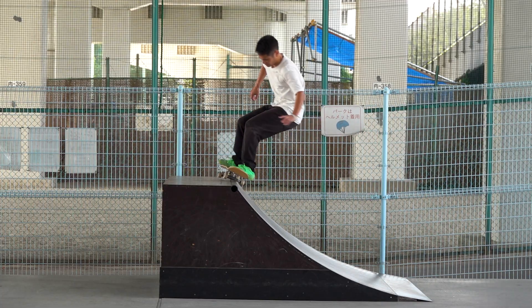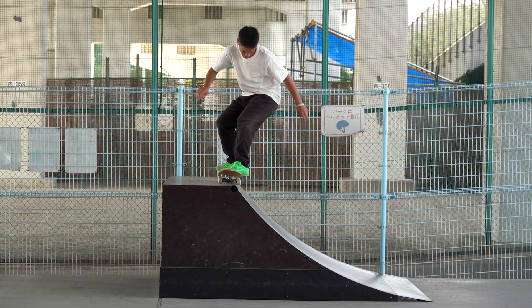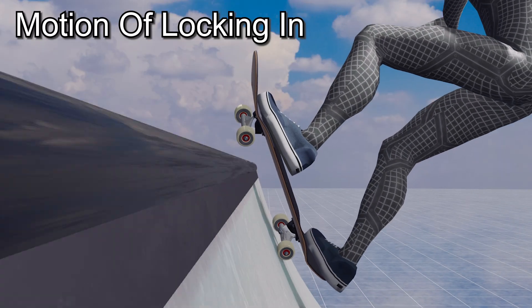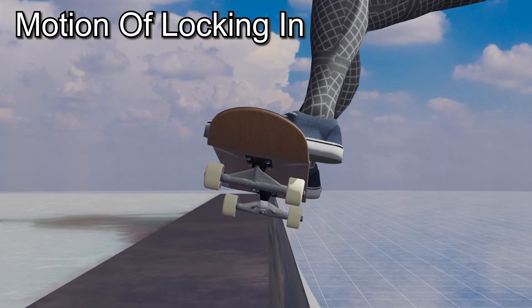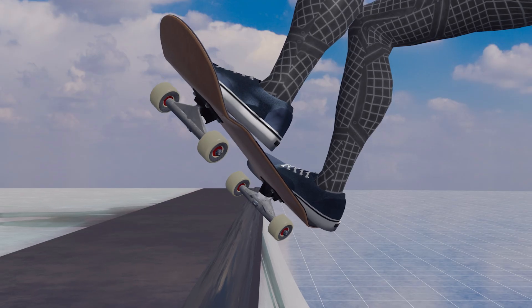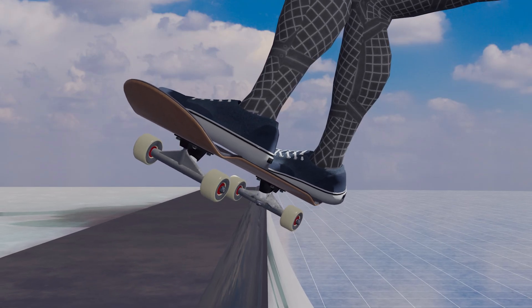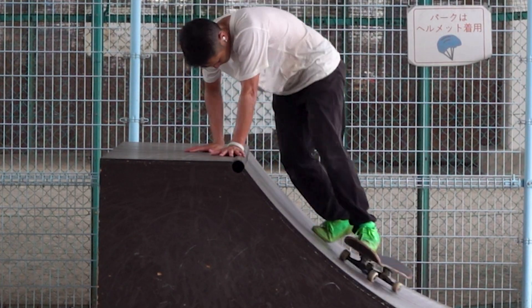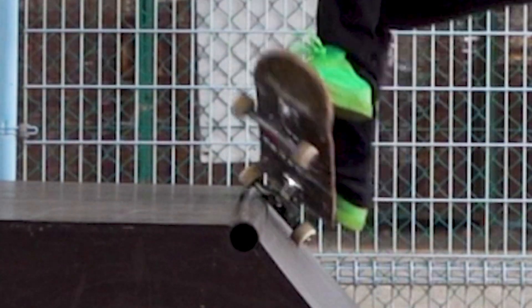Once you are comfortable with rolling back in, the earlier parts of the trick should feel much safer. Now, let's look at the motion of locking in. When locking in, a frequent issue is that, while the back truck locks in, the front truck stops on the deck of the ramp. Or, you may also lock in with the toe side with both trucks.